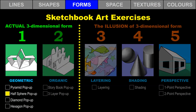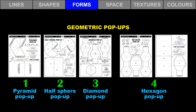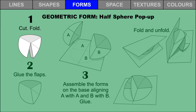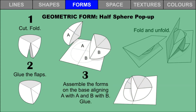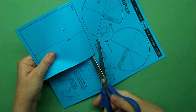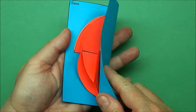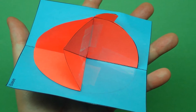Let's create the half-sphere pop-up. Printable worksheets are provided. Cut out the two form templates and fold along all of the dashed lines. Make two forms by gluing the flaps. Cut out the base and fold along the central dashed line. Align the pie shape A on your form with the pie shape A on the base and glue. Align the pie shape B on your form with the pie shape B on the base and glue. This half-sphere form will fold flat. Take your time to cut and fold accurately — don't use too much glue. You can use clear tape instead. This three-dimensional form is made with different two-dimensional shapes. Which geometric shapes can you find?